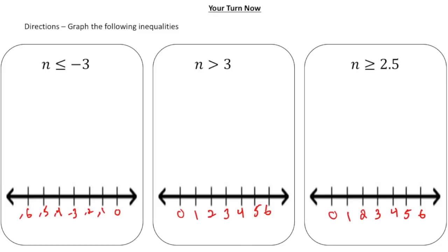Welcome back — let's see how you did with these practice problems. The first one: n is less than or equal to negative 3. So we put a closed circle at negative 3 and draw an arrow to the left for all values less than negative 3. Next: n is greater than 3. This is an open circle, with all values to the right of 3, because n is greater than 3.